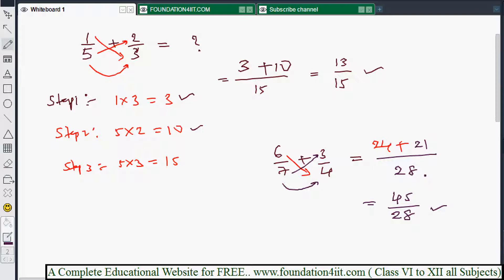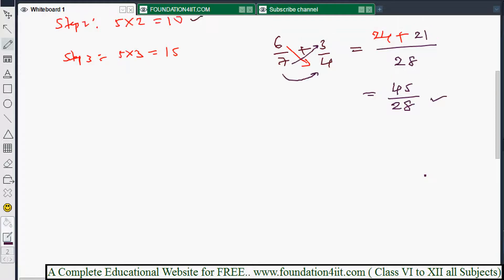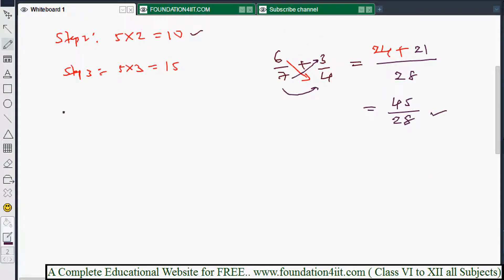If any possibility of simplification you can do. 45 and 28 have no common table so you can't simplify. Next, I'll show you one more example.